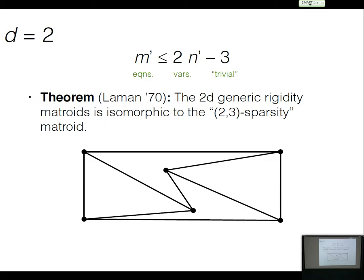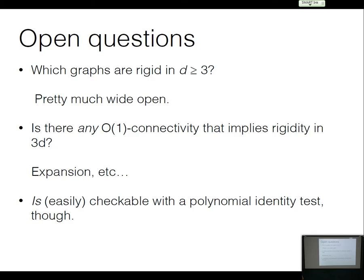But in dimension three, as Shinichi mentioned, there's no widely believed conjecture — it's kind of wide open. To give you a flavor: it's not known if there's any constant amount of connectivity that implies rigidity. If I tell you that your graph is a million-vertex-connected, can you prove to me that it's rigid? I don't know. This is still an open problem.